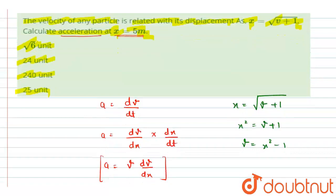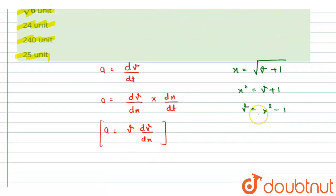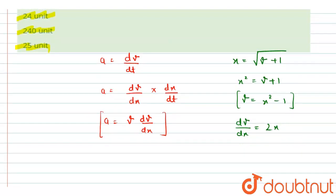Okay, so now we can put here this value of v. And also we have to find the value of dv by dx. So let me differentiate this equation once. So on differentiating the velocity with respect to displacement, we will get 2x. Okay, now we have both the values.